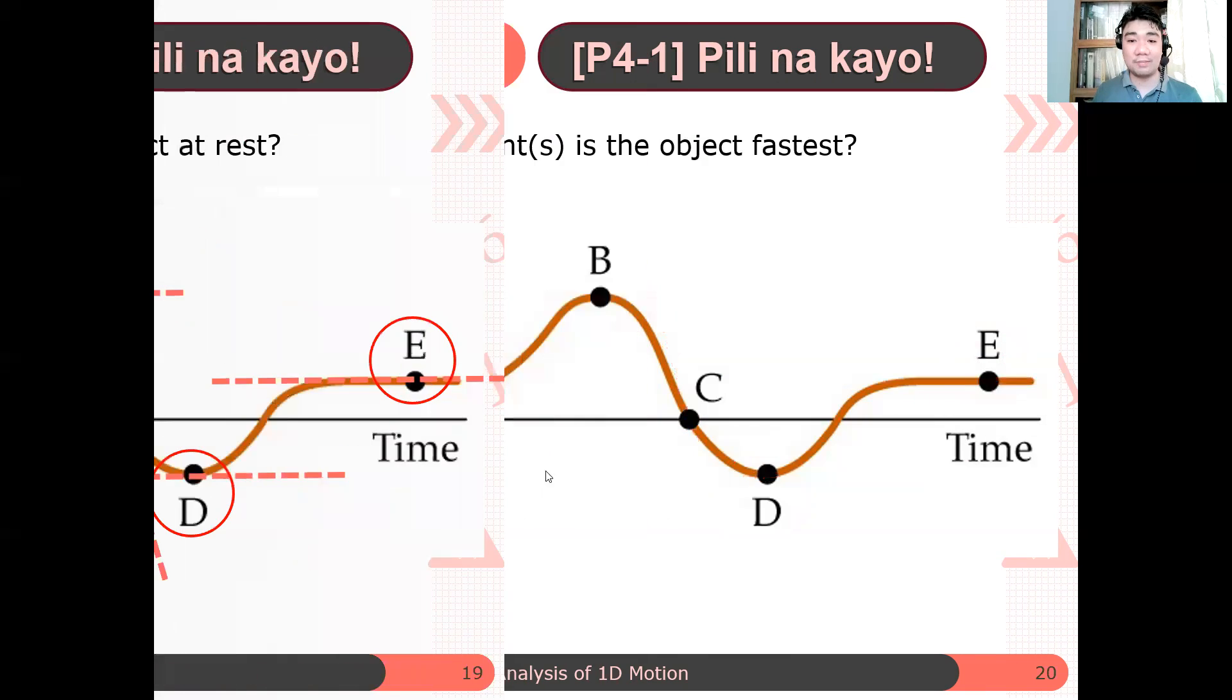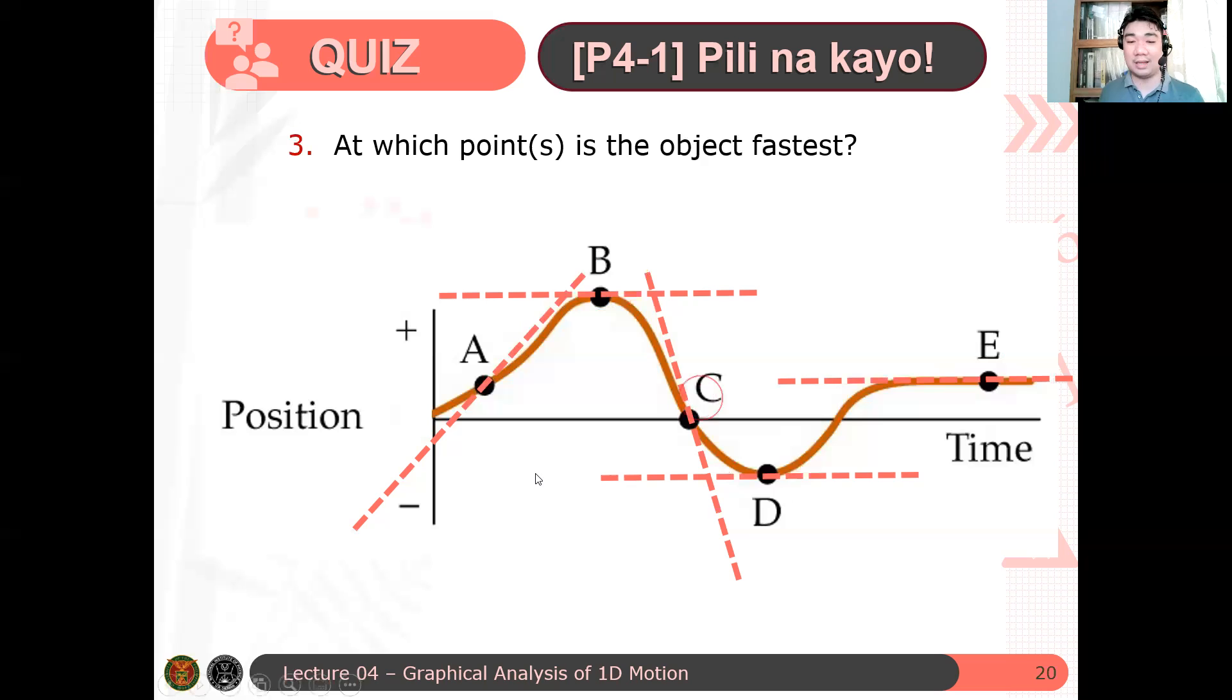For the last question for this particular quiz, at which point or points is the object fastest? How do you determine it? Binigay na yung sagot. Letter C. Why is it letter C? Kasi from the slopes, we see that the one at point C is the steepest. Yung pinaka steep, yung pinaka mabilis dapat, regardless ng anong sign. Kasi we're only talking of how slow or fast the object is. Therefore, speed yan. Hindi yan velocity. Hence, even though that A has a positive slope, C has the steepest slope. Therefore, since the steepest C, in that case, dapat malaki yung kanyang speed. And therefore, at that point, the particle is the fastest at points.